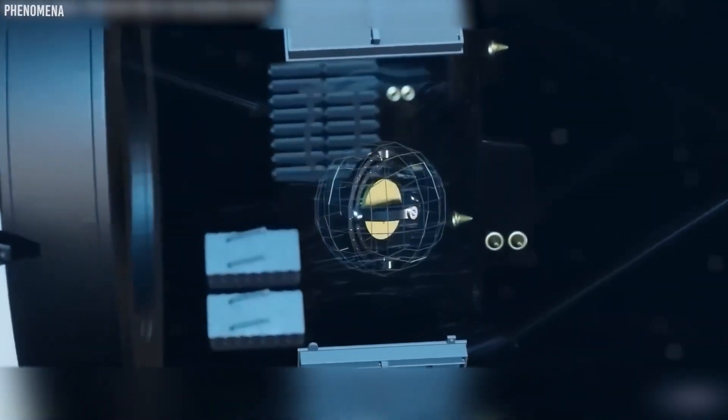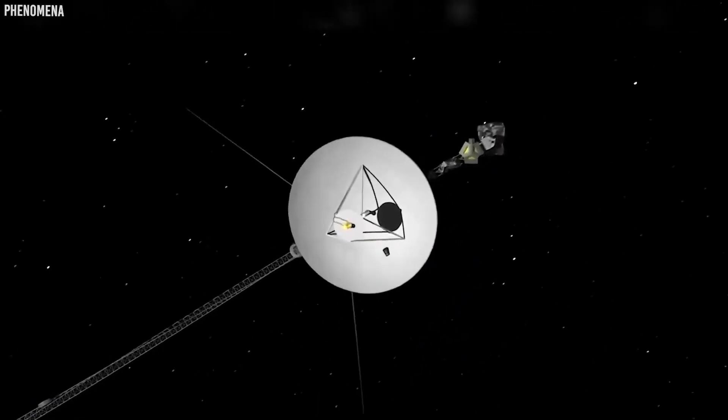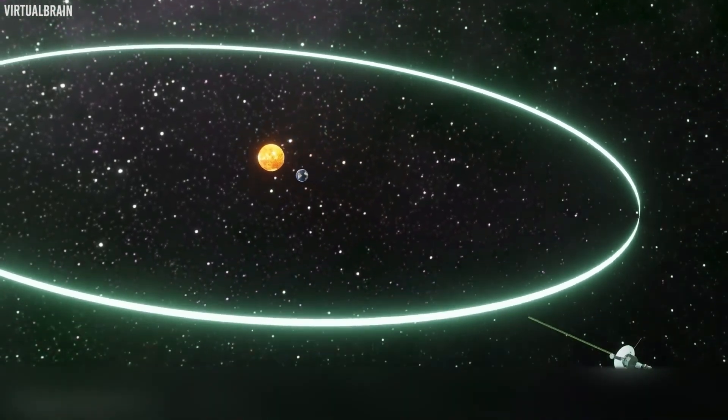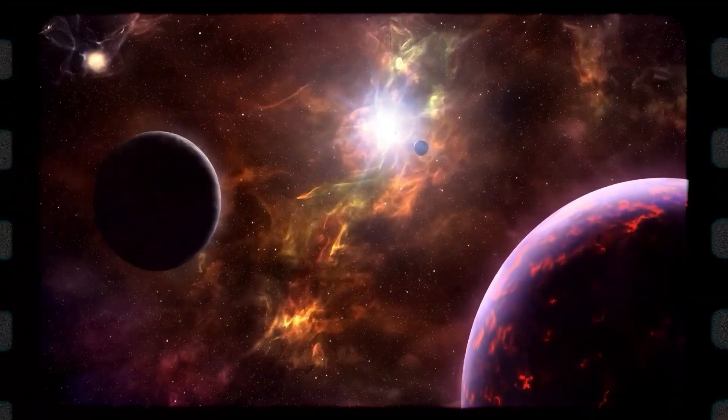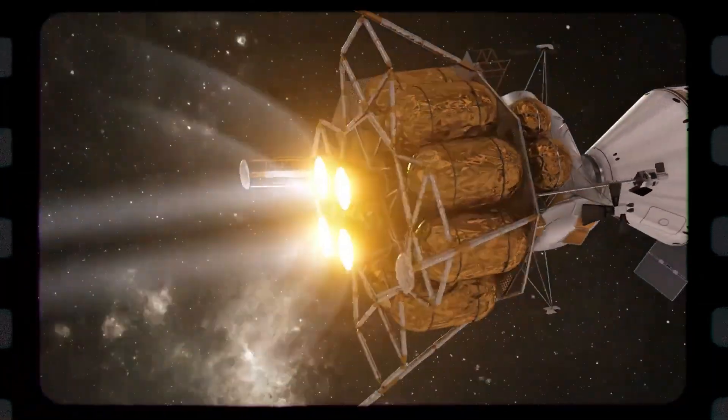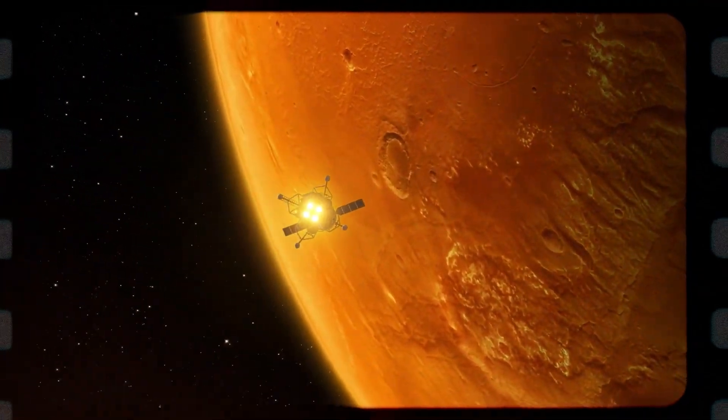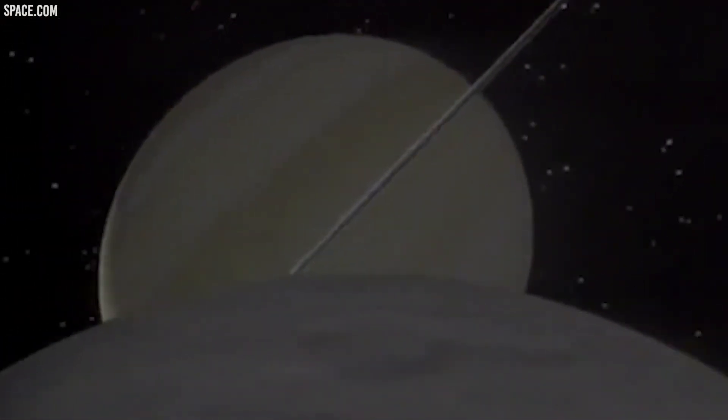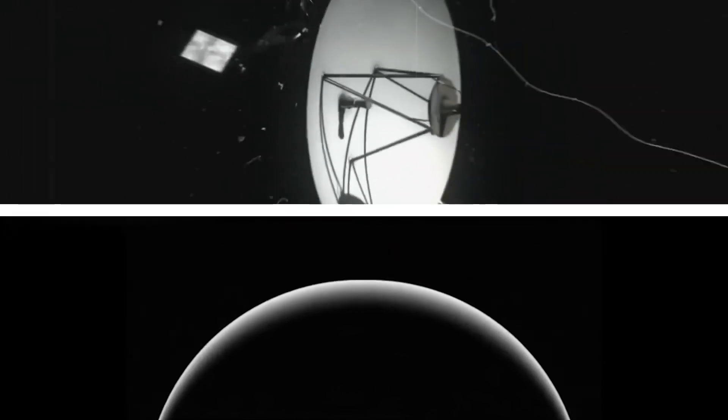On August 20th, 1977, Voyager 2 lifted off from Cape Canaveral. It launched first despite being number two. Sixteen days later, on September 5th, Voyager 1 followed, riding into space atop a Titan II Centaur rocket. Because Voyager 1 was on a faster trajectory, it would overtake its twin to reach Jupiter and Saturn first. As the two probes sailed away from Earth, few could have imagined that nearly half a century later, one of them would still be making headlines—not for what it was finding, but for what might have found it.